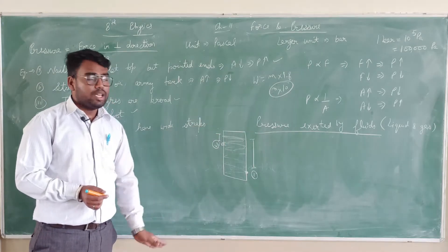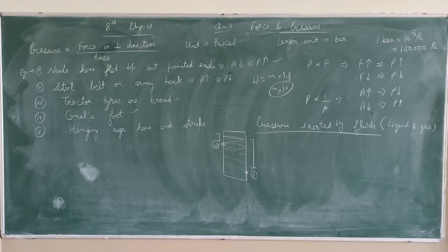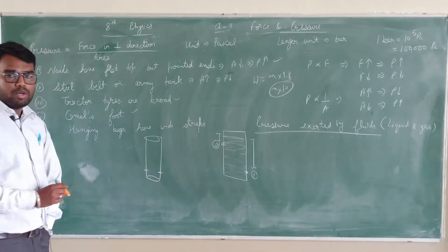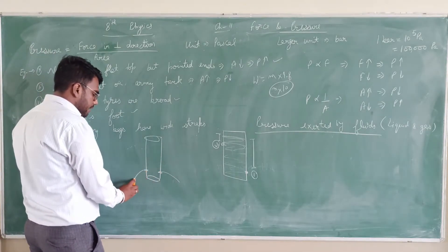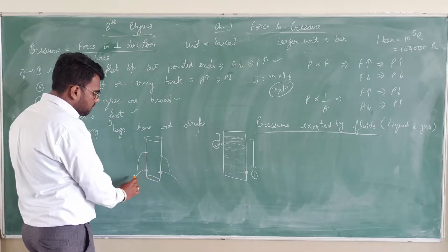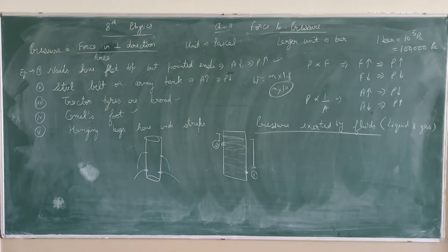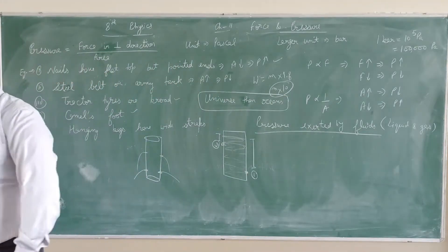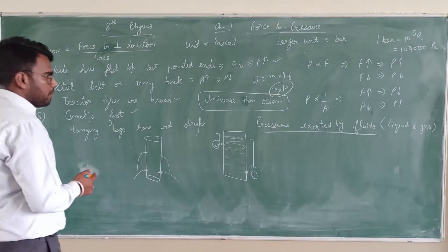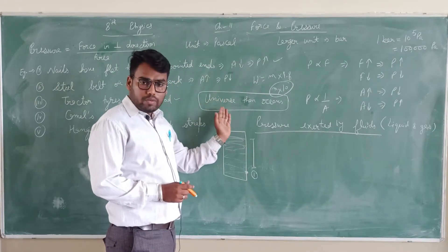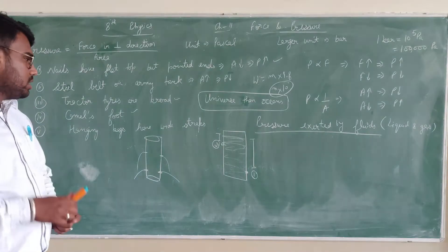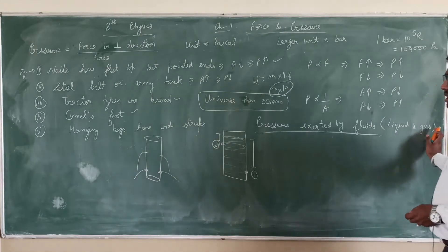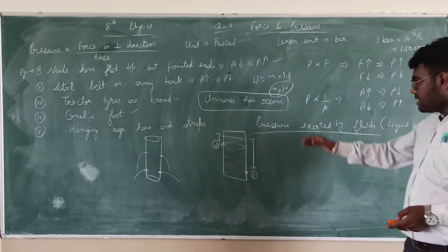This is a scientific experiment you can do at home. Take a plastic bottle and make holes at the same height from the bottom — you will see water coming from both holes with the same pressure. You can also observe that water from a lower hole shoots farther. This is also the reason we know more about the universe than about the ocean: as we go upward, air decreases and the pressure exerted by the fluid, that is gases, also decreases. But as we go deeper into oceans, the amount of water above increases, so the pressure increases.